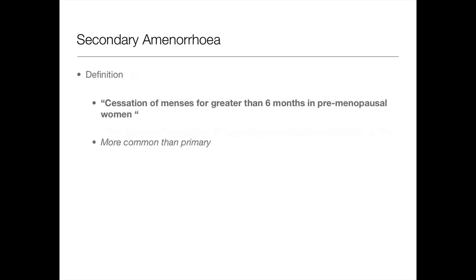Secondary amenorrhea is the cessation of menses for greater than six months in a pre-menopausal woman. Pre-menopausal is the operative word here, because obviously if they're menopausal you'd expect this — if they're 65, they're not going to have any periods. And secondary is a lot more common than primary.